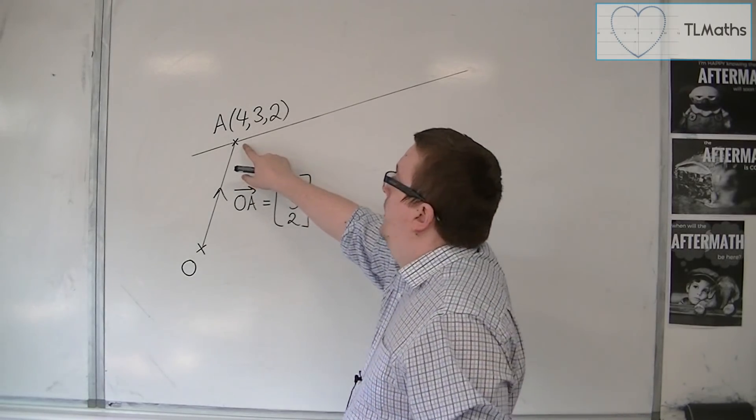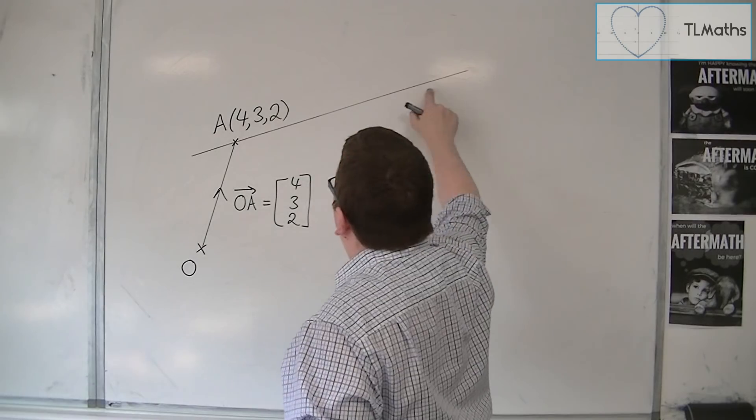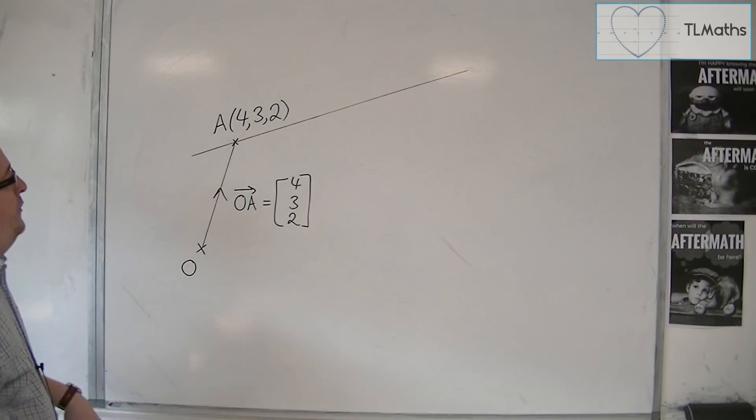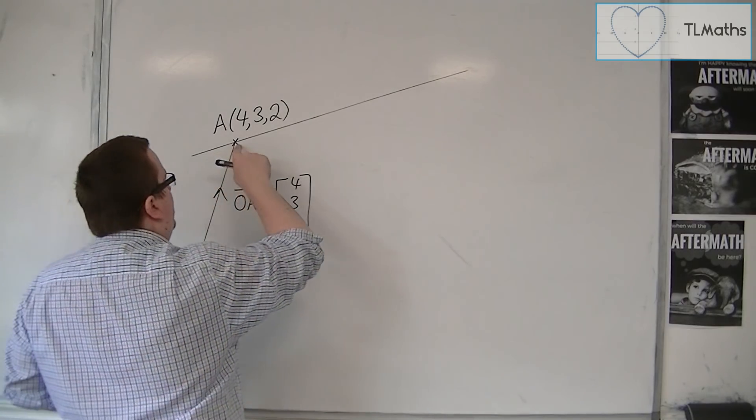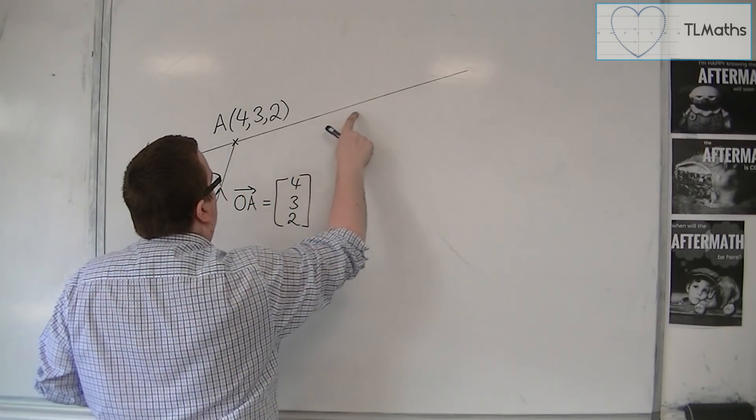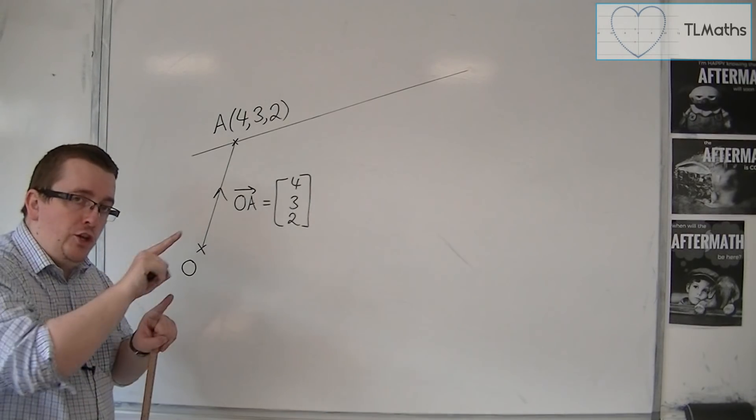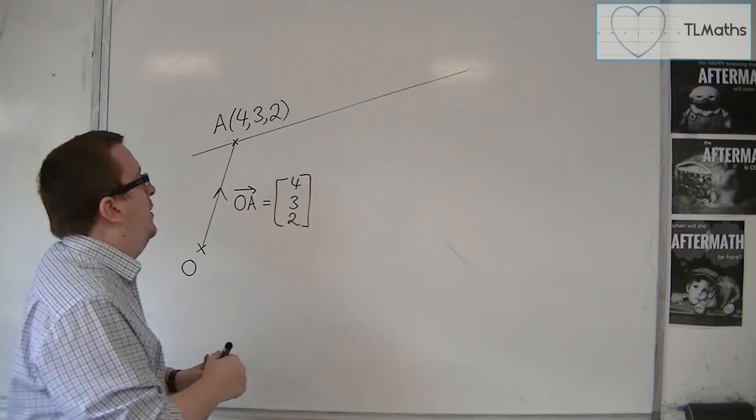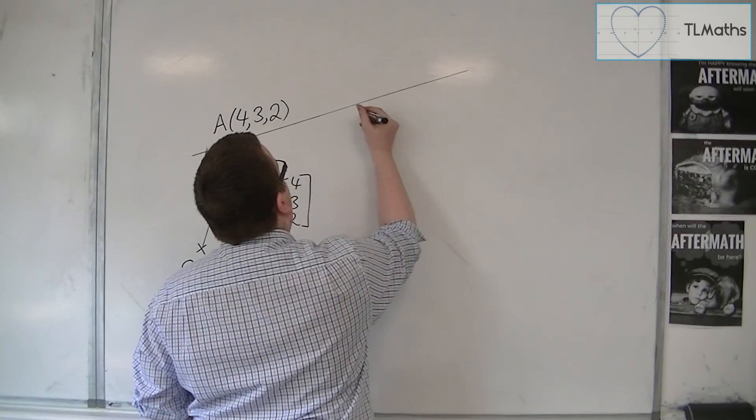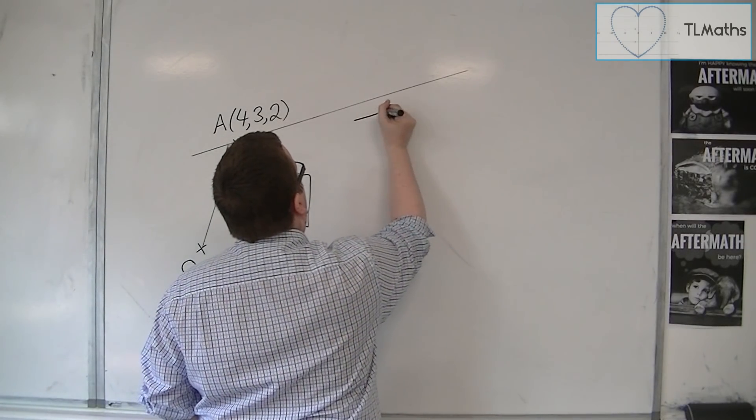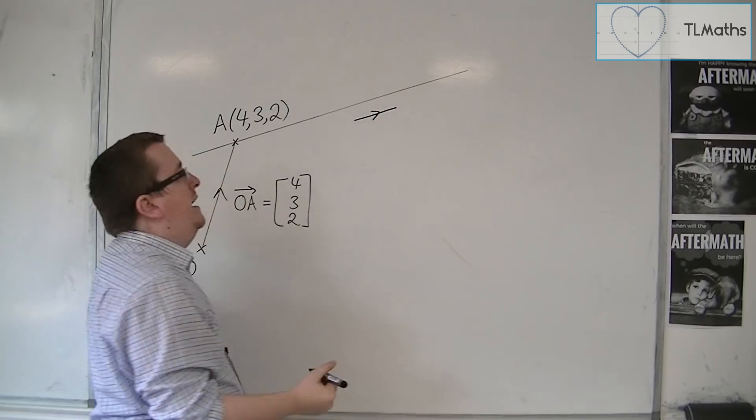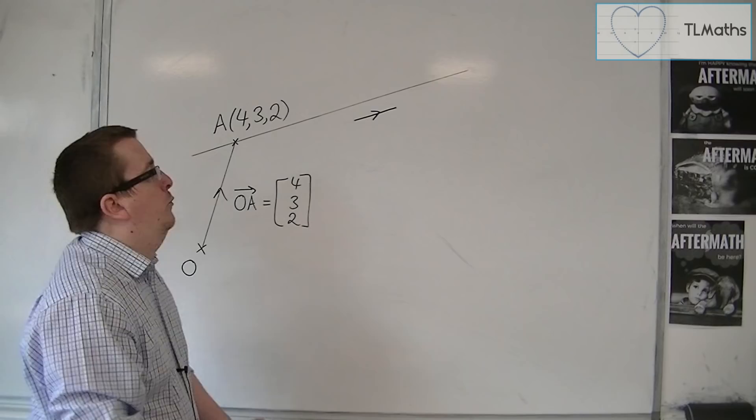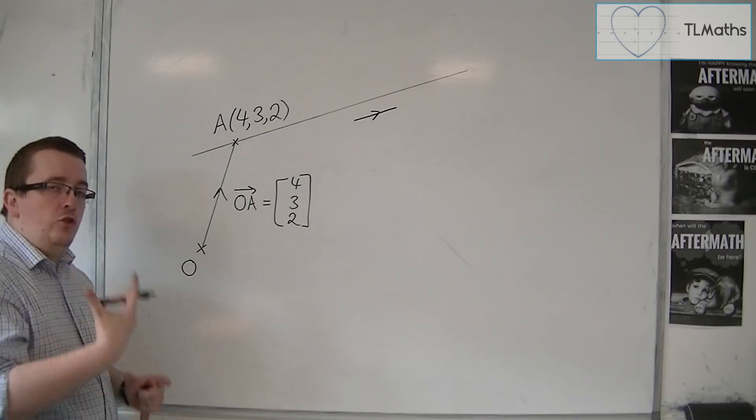From there, I need a way of getting myself to any point that is on that line. In other words, I need to make sure that I am traveling in the direction of that line. So, this line may have a certain direction. A vector that it is parallel to would give me this direction.